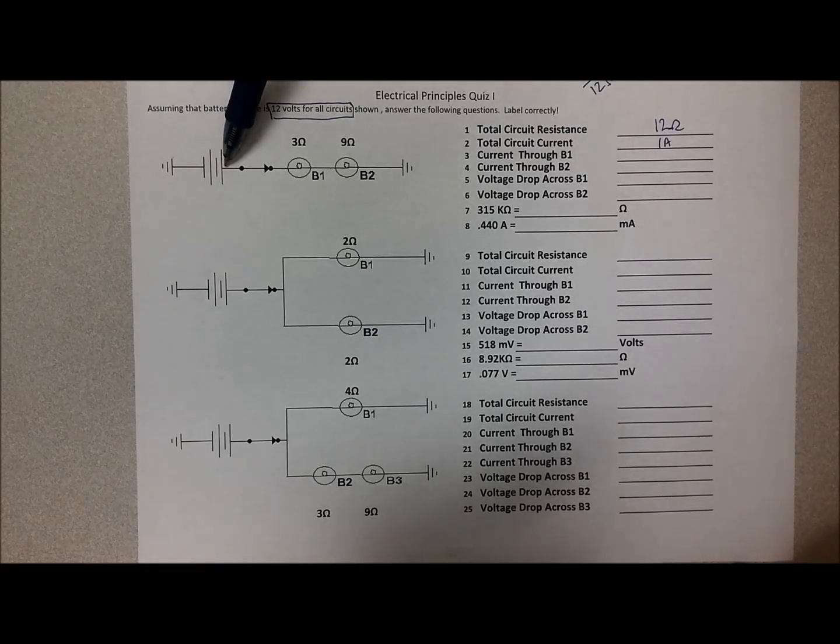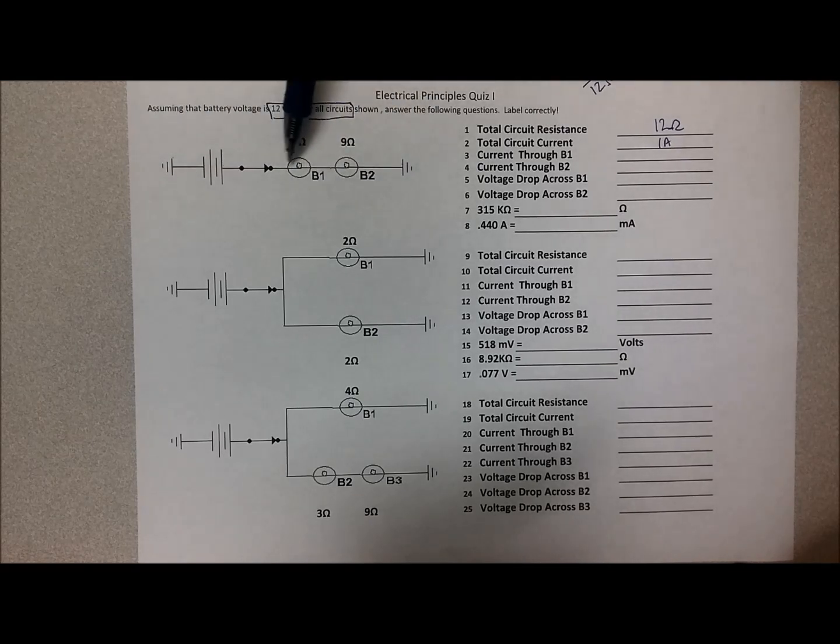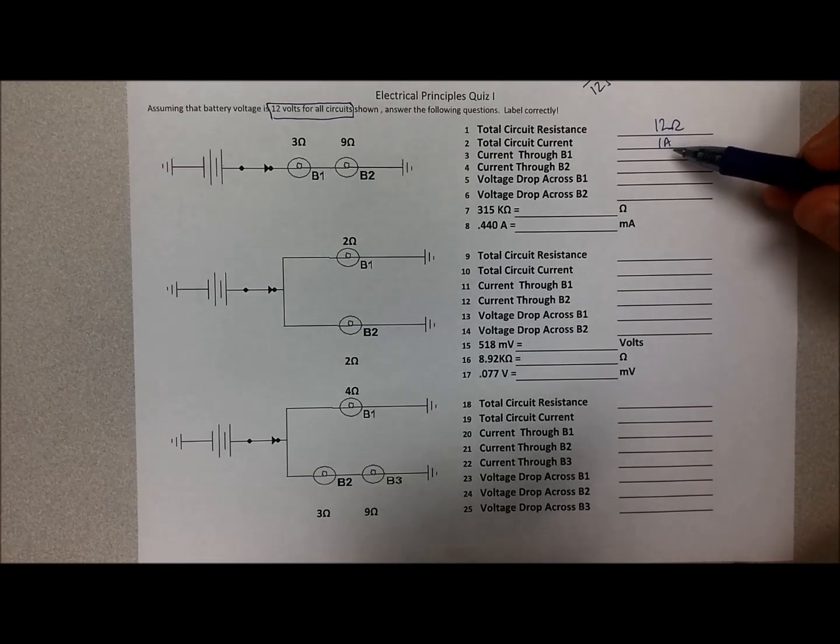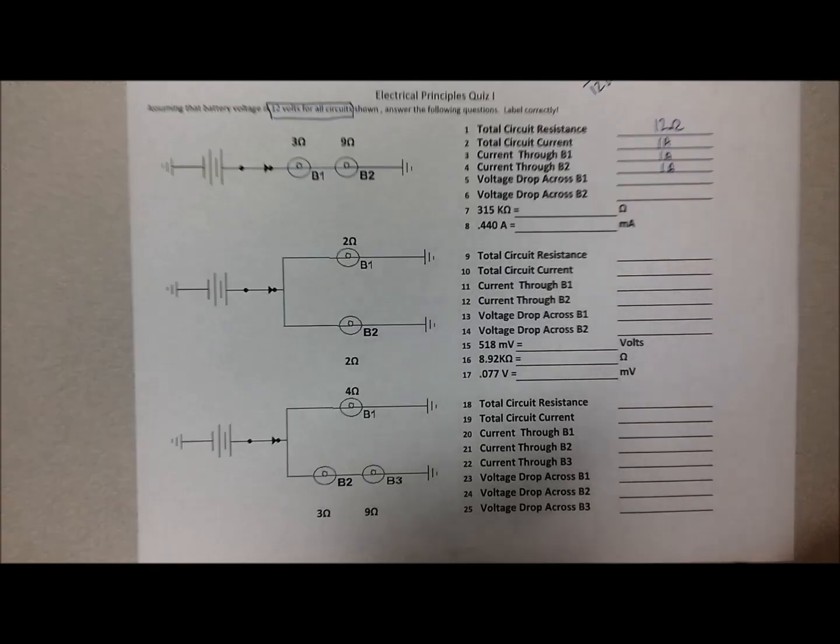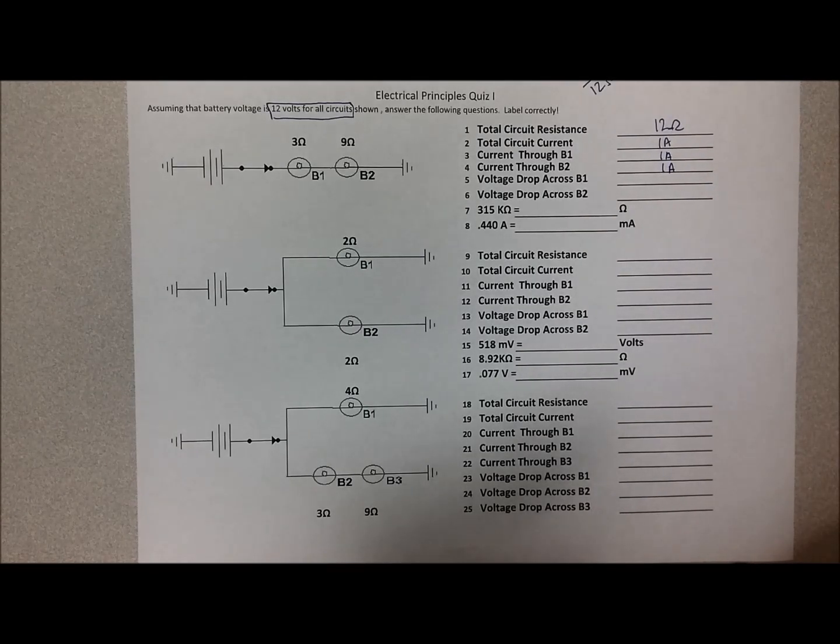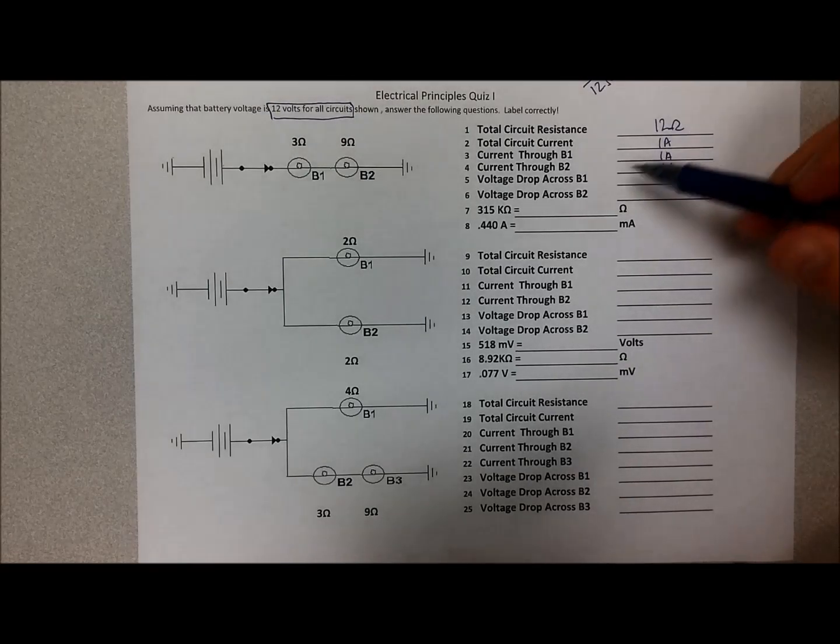Now current, if there's one amp of current that leaves the battery and flows through the circuit, obviously one amp has to flow through that bulb and one amp has to flow through this bulb. So when it asks what's the current through bulb one, it's one amp. Through bulb two, it's also one amp. The current can't change. Electrons can't be created or destroyed halfway through the circuit.